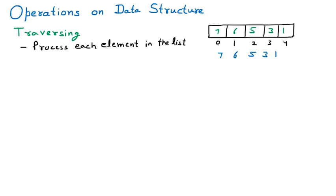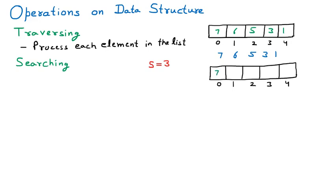Searching is the next operation. Searching means we are going to search for a certain element. Considering the same array, if we want to search for some element, that is called searching. Assuming we want to search for the number three — let S be the number to search, and that number is three — we will search for it inside the array which contains seven, six, five, three, and one.